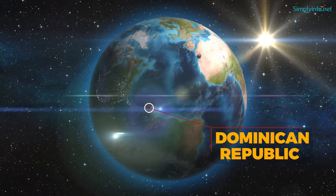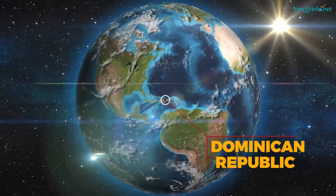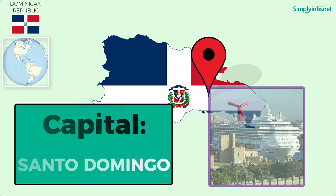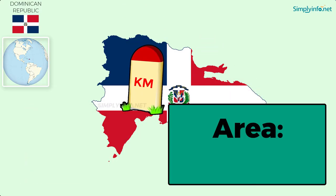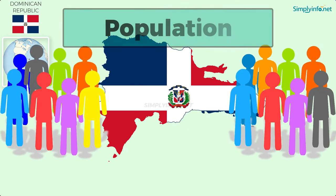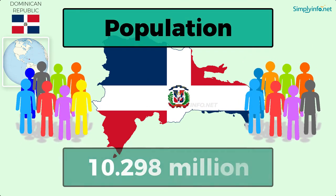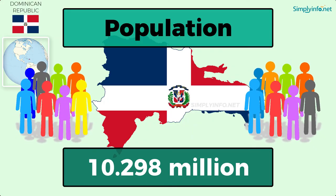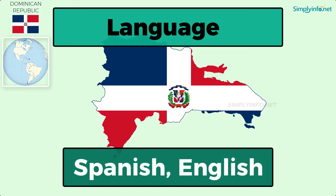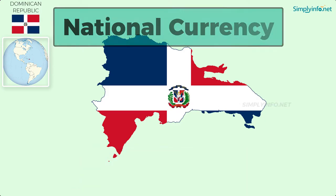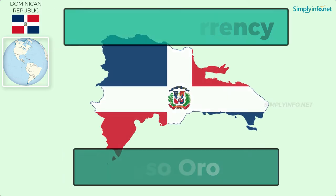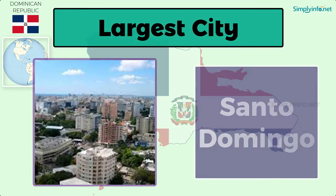Dominican Republic. Official name: Dominican Republic. Capital: Santo Domingo. Area: 48,670 square kilometers. Population as of 2018: 10.298 million. Languages: Spanish and English. National currency: Peso Oro. Largest city: Santo Domingo.